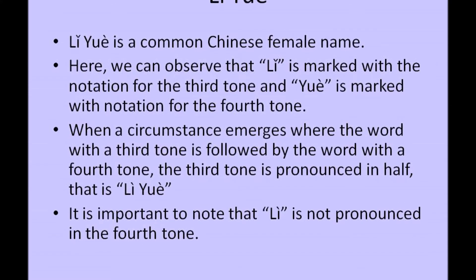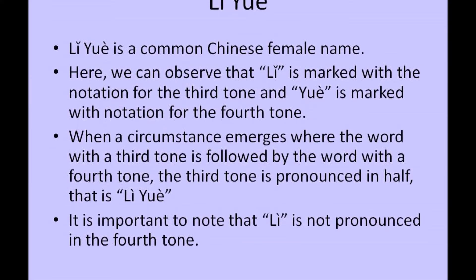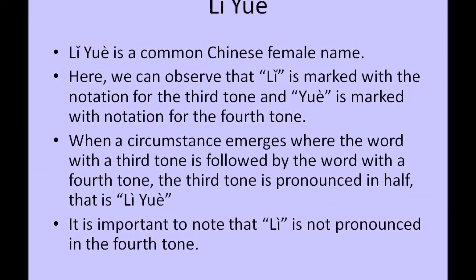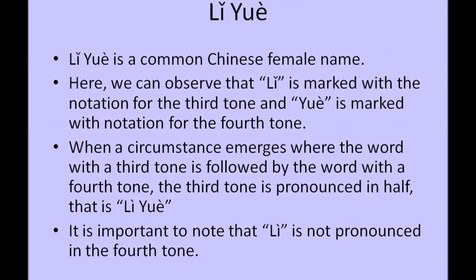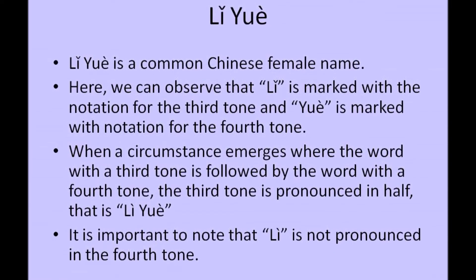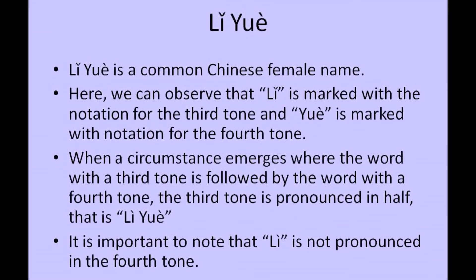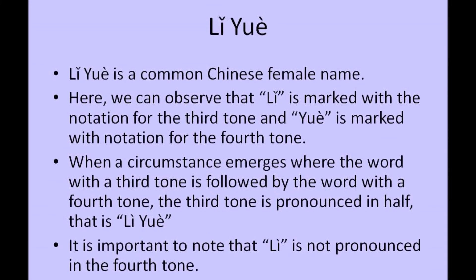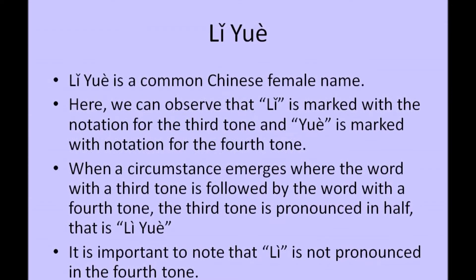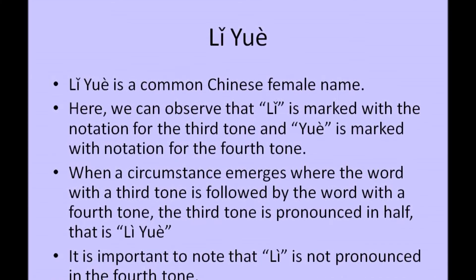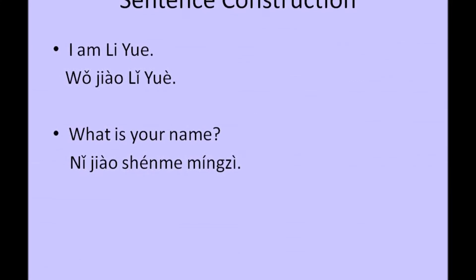Now we come to another important exception in Chinese pronunciation. Li Yue is a common Chinese female name. If you notice carefully, Li is marked with the notation for the third tone, and Yue is marked with the notation for the fourth tone. When a word with the third tone is followed by a word with a fourth tone, the third tone is pronounced in half — that is, to completely ignore the rising notation in the third tone. These challenges make it slightly complicated to learn Chinese, because a slight notation change will alter the pronunciation and the entire meaning. Li is not pronounced in the fourth tone.